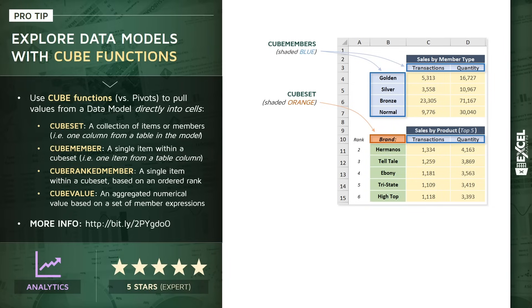Within cube sets, you have something called cube members, shaded in blue in the visual. A cube member is a single item from within a cube set — one item out of a table column. Here we're looking at different values within the membership column in our customer table: gold, silver, bronze, and normal. Note that we also use cube members to define quantitative measures or calculated measures like transactions or quantity.